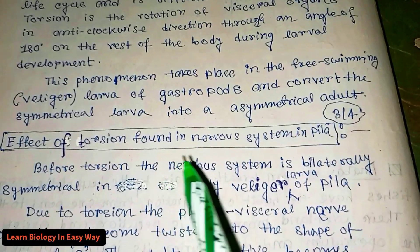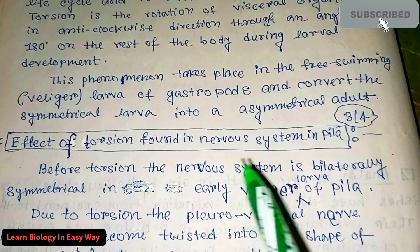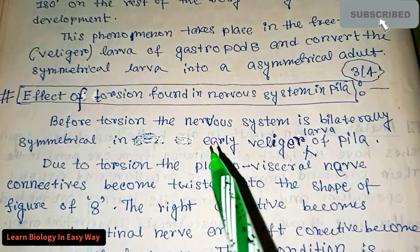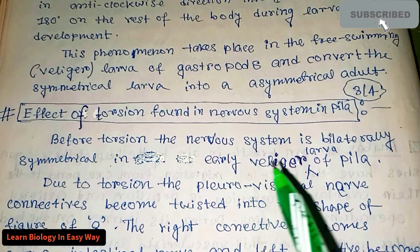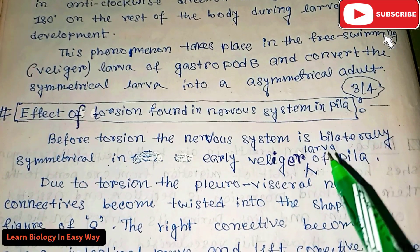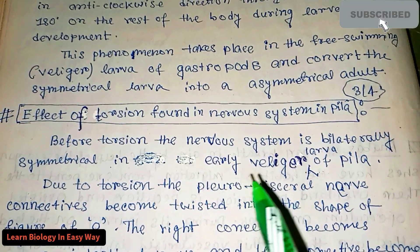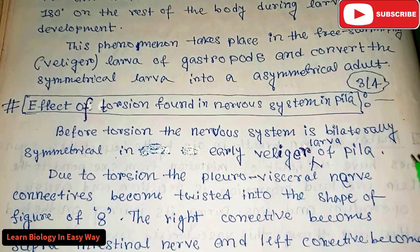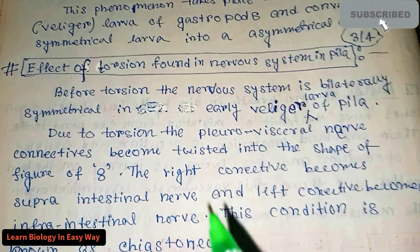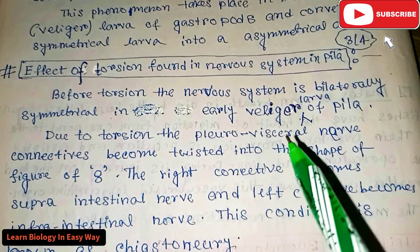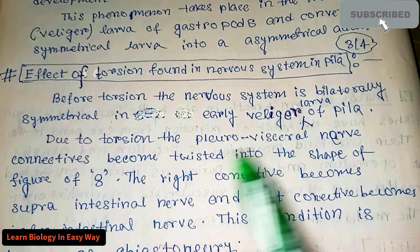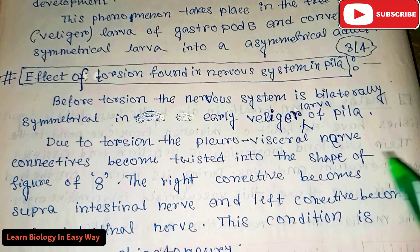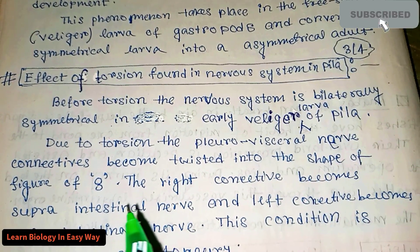The effect of torsion is found in the nervous system of Pila. Before torsion, the nervous system is bilaterally symmetrical in the early veliger larva of Pila. Due to torsion, the pleurovisceral nerve connectives become twisted into the shape of a figure of eight.